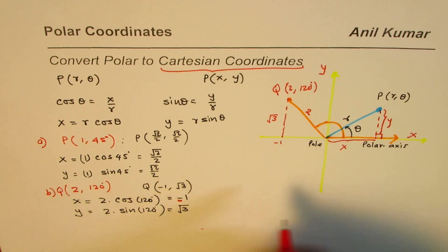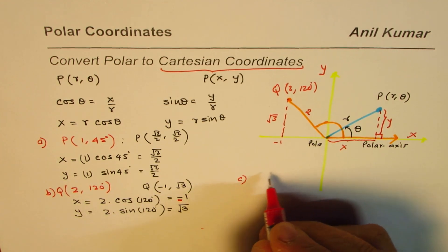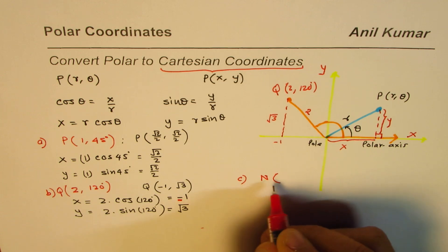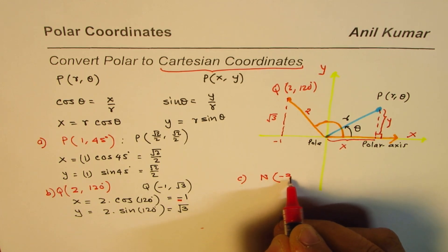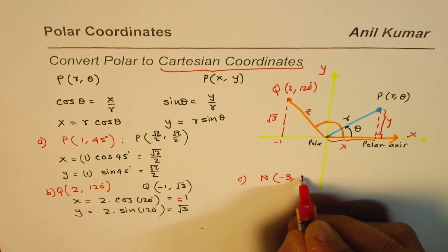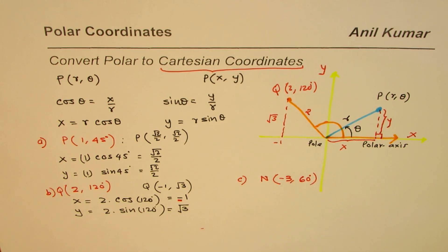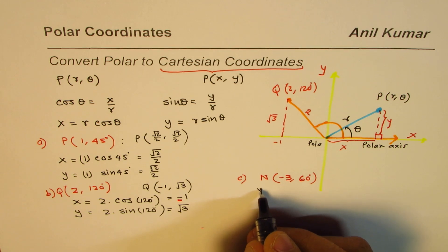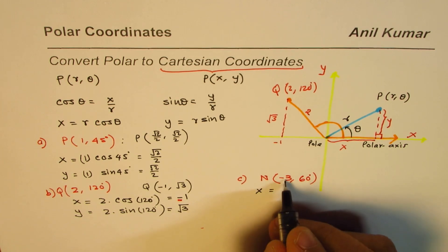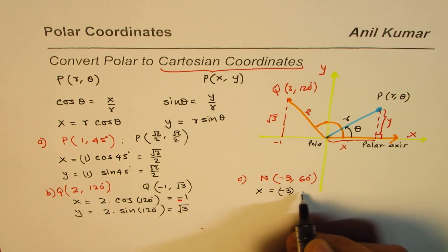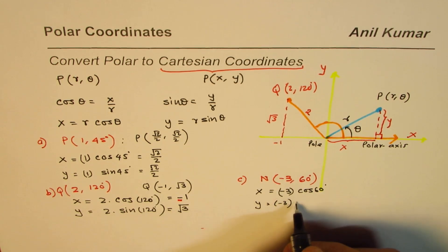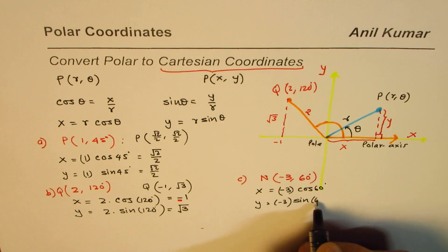Let me take another example. Let's say point N is (-3, 60°) — so we have taken a negative r value. If the r value is negative 3, the x value becomes negative 3 times cos of 60°, and the y value would be negative 3 times sine of 60°.